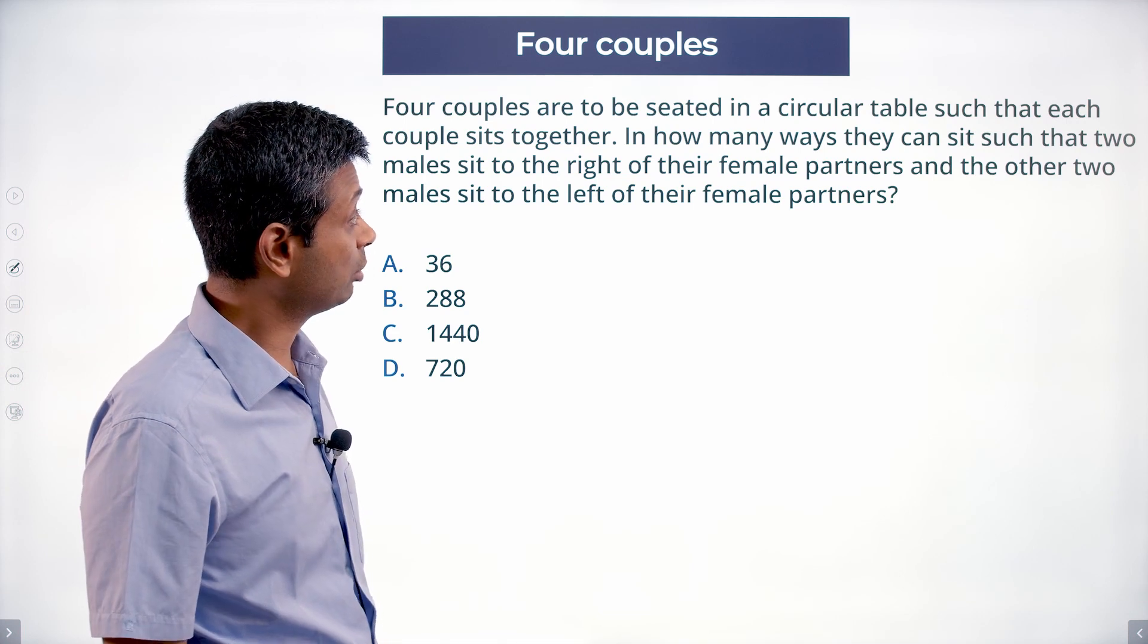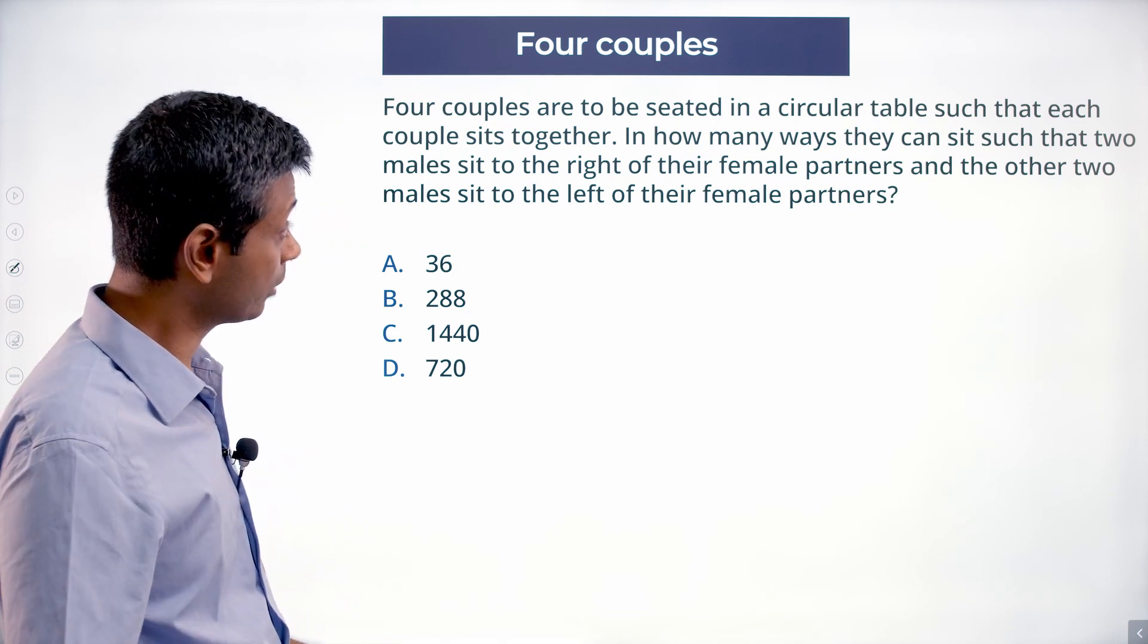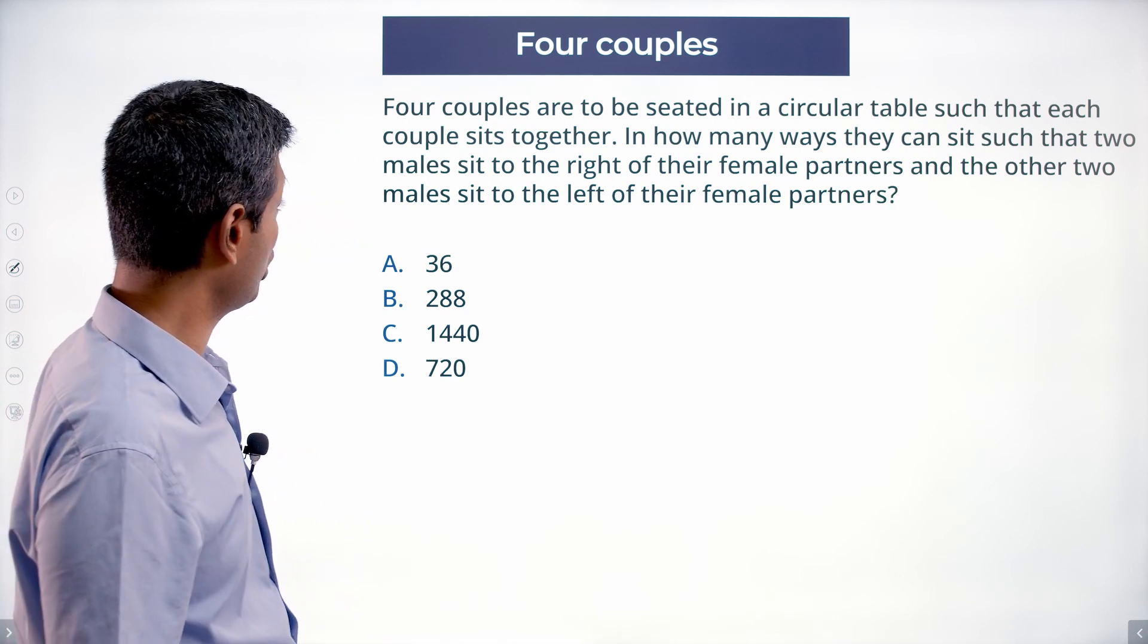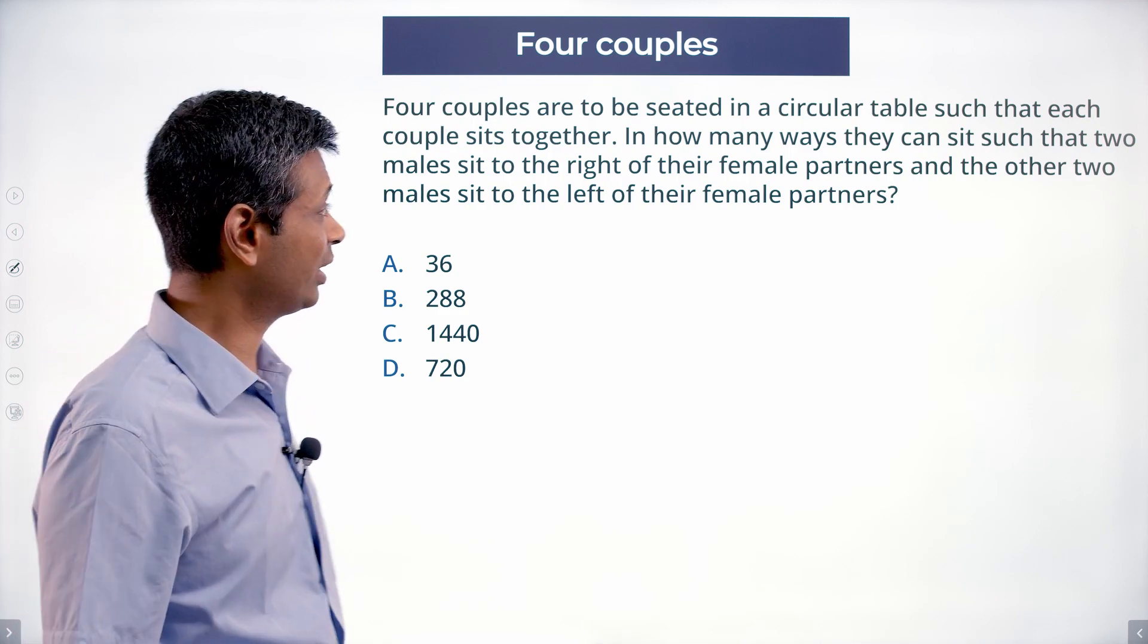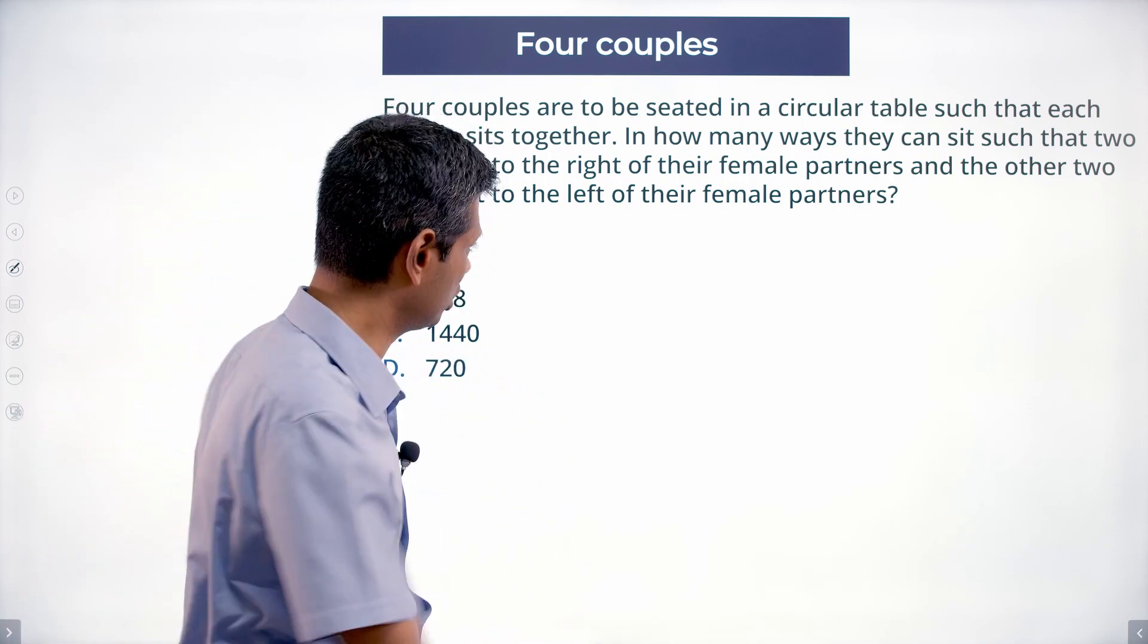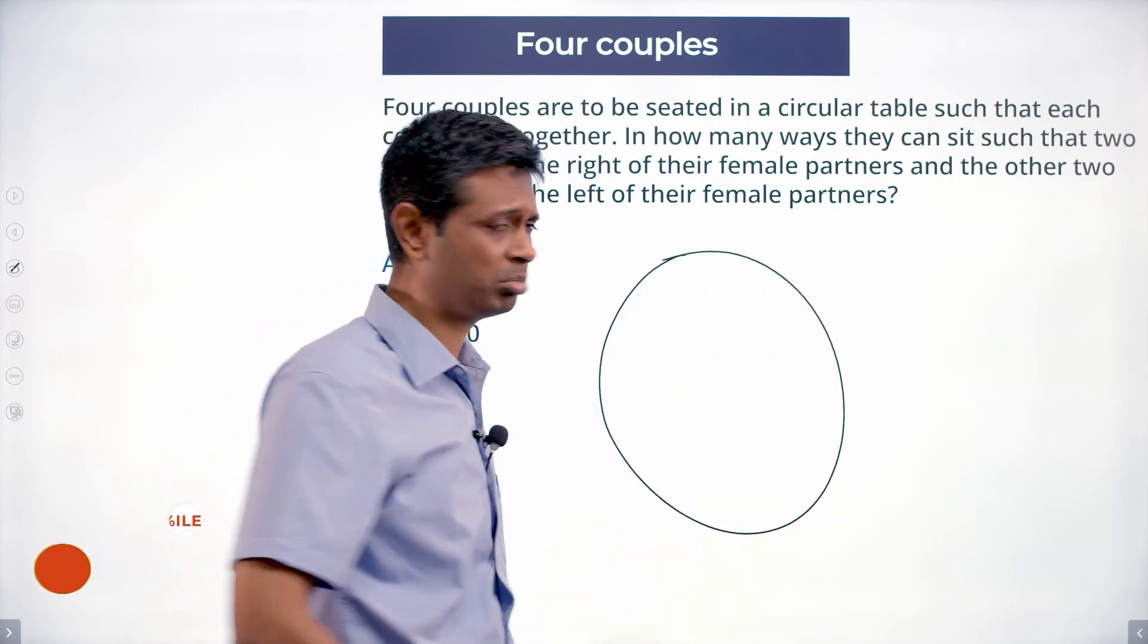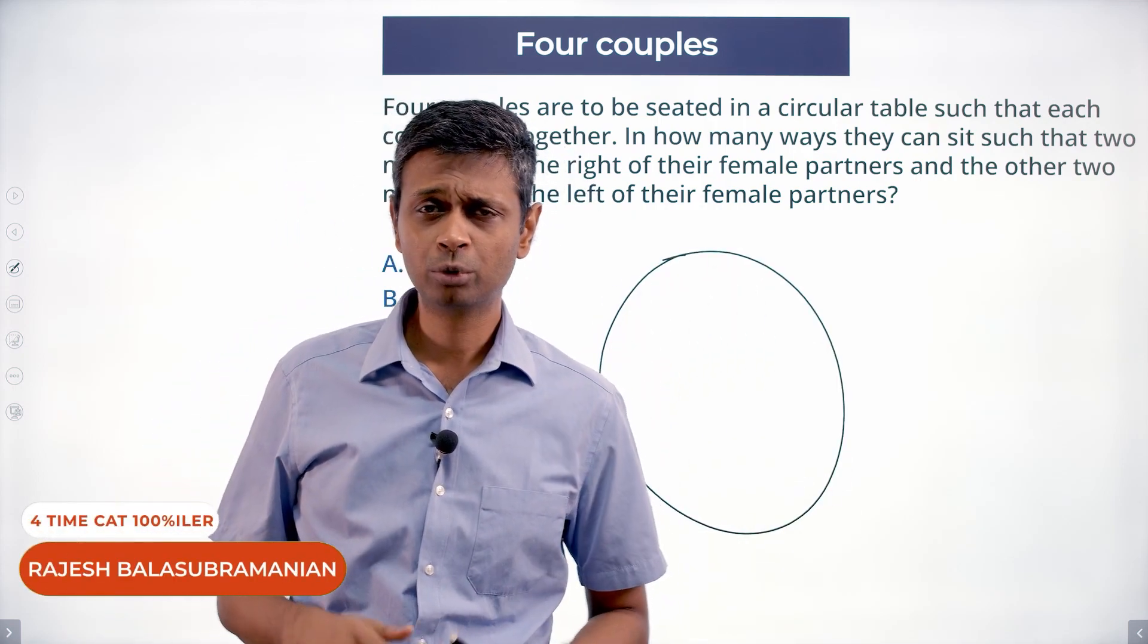Four couples have to be seated in a circular table such that each couple sits together. In how many ways can they sit such that two males sit to the right of their female partners and the other two males sit to the left of their female partners? Around a circle, this is per se trickier.